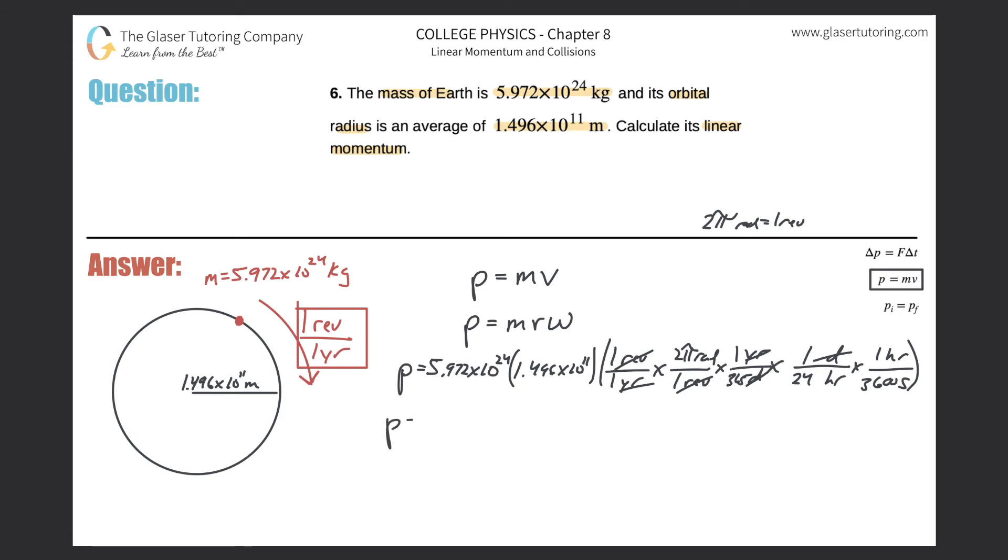Now we just got to throw this all into the calculator and we're going to get our answer. So 5.972 times 10 to the 24th times 1.496 times 10 to the 11th multiplied by 2 times pi and then that all divided by 365 times 24 times 3600. And there it is: the momentum will be 1.78 times 10 to the 29th.